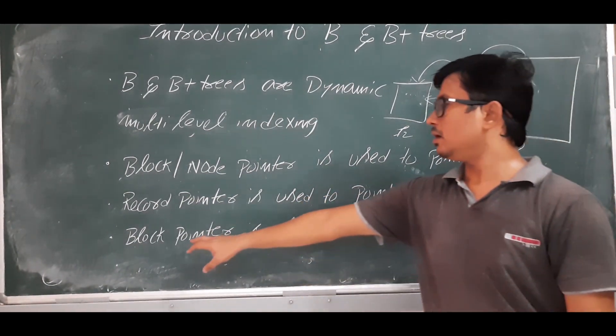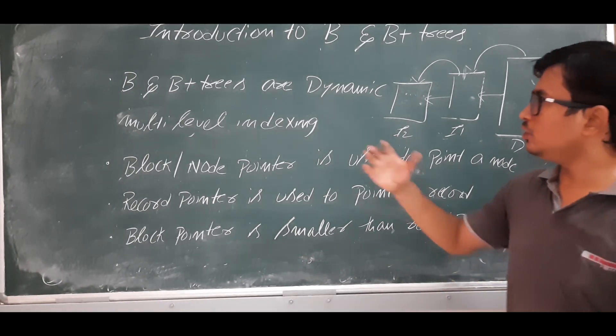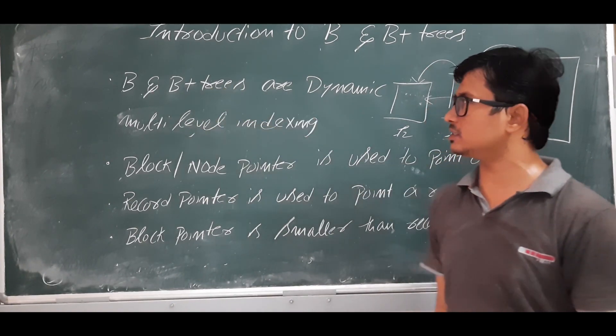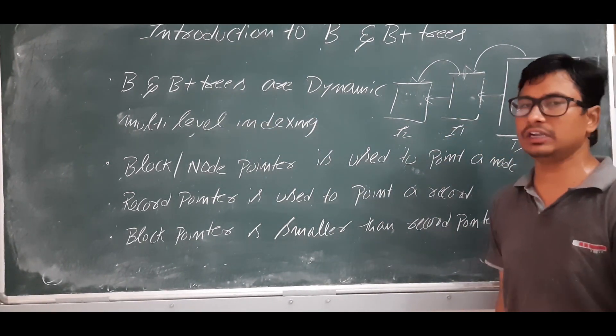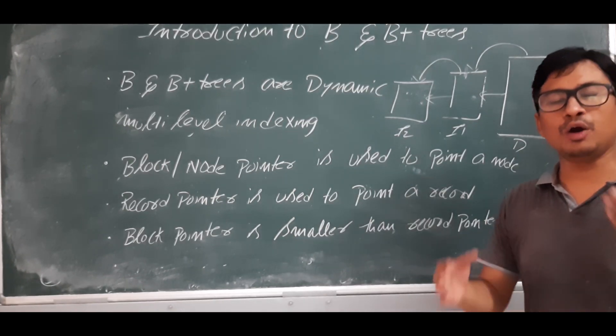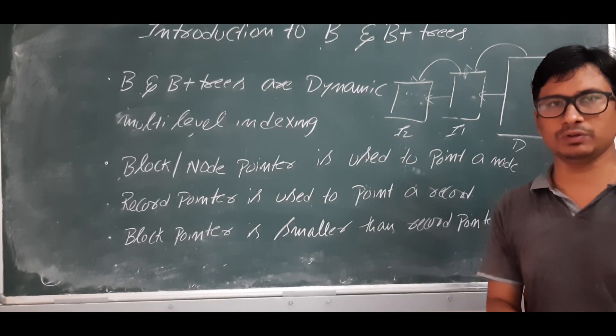Block pointer is smaller than the record pointer. Usually nowadays we are applying only B+ trees. In the next videos we will discuss the properties of B trees, how to construct B trees, how to delete elements from B trees, and all these things.